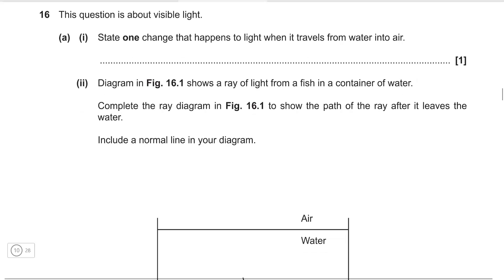This question is about visible light. State one change that happens to light when it travels from water into air. Well it is being refracted. Additionally we could have scored that mark if we mentioned the speed meaning the speed will increase or its wavelength increasing as well.